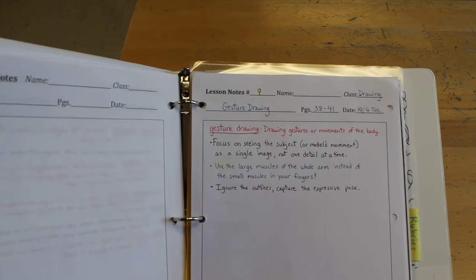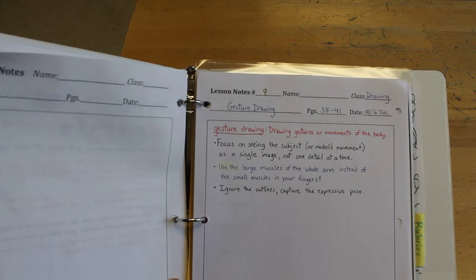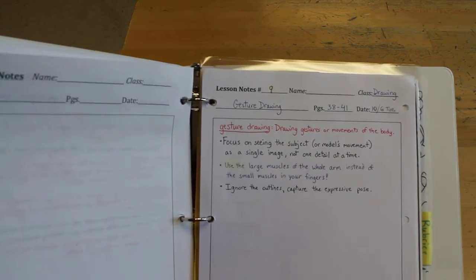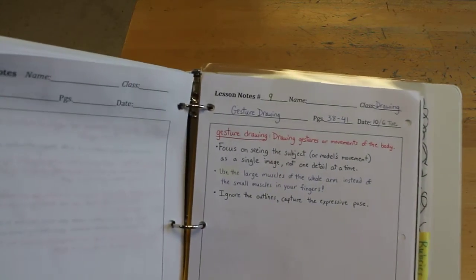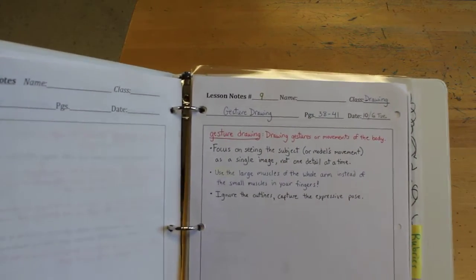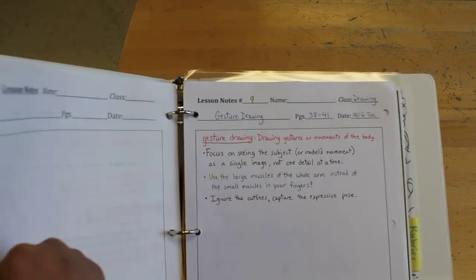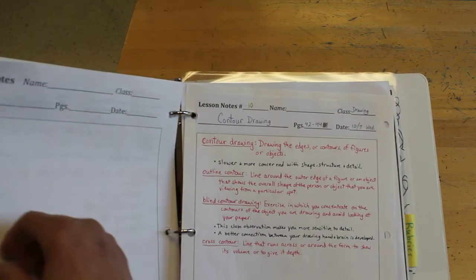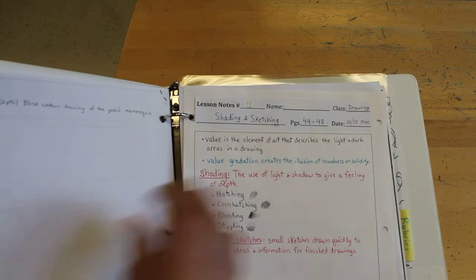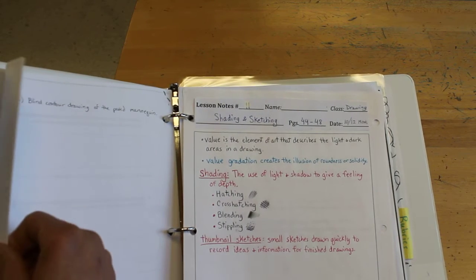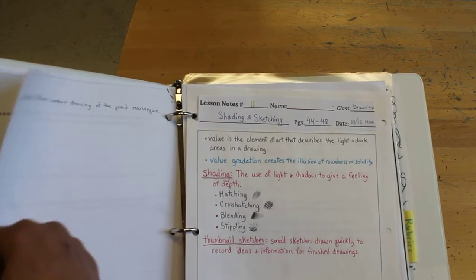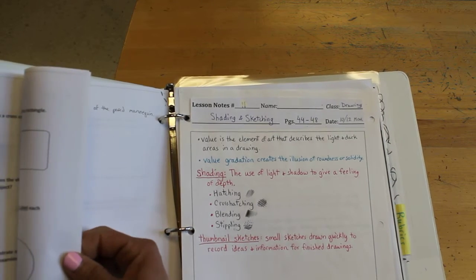And then I provided you with a hard copy of our new notes that you were going to do during e-learning. But make sure you actually hand copy those if you want credit for them even though I gave you the hard copy. So number nine was gesture drawing. And number ten contour drawing. And then the last one for that chapter that's chapter three. Shading and sketching is number eleven.